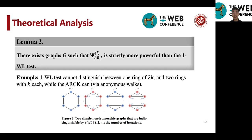And this is a corollary of another work which shows that 1-WL test cannot distinguish between one ring of 2K and two rings with K each.